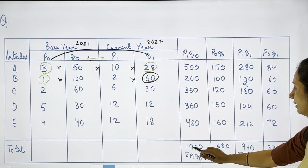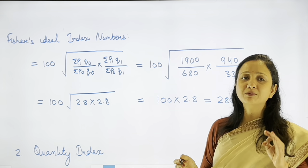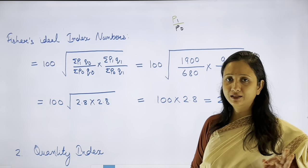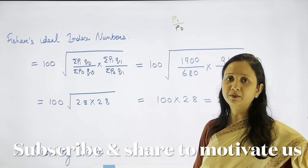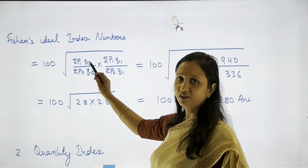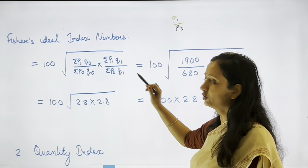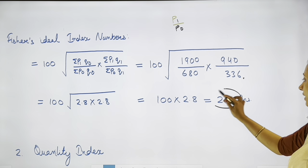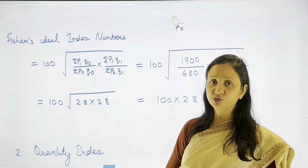After all multiplications, the totals are: ΣP1Q0 = 1900, ΣP0Q0 = 680 (corrected per calculation), ΣP1Q1 = 940, ΣP0Q1 = 336. Fisher's Ideal Price Index = √[(ΣP1Q0/ΣP0Q0) × (ΣP1Q1/ΣP0Q1)]. Substituting and solving gives Fisher's Ideal Index = 280.